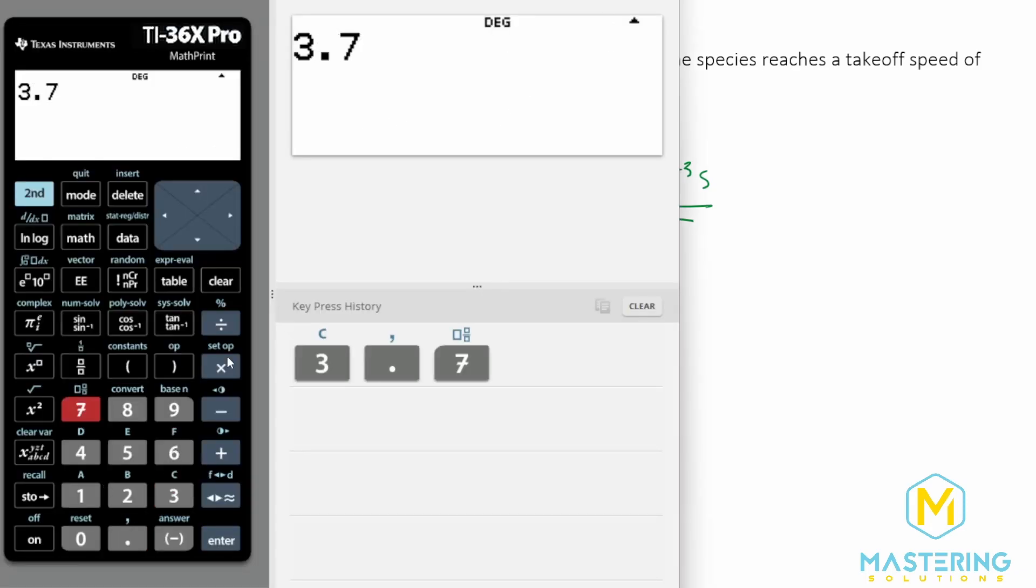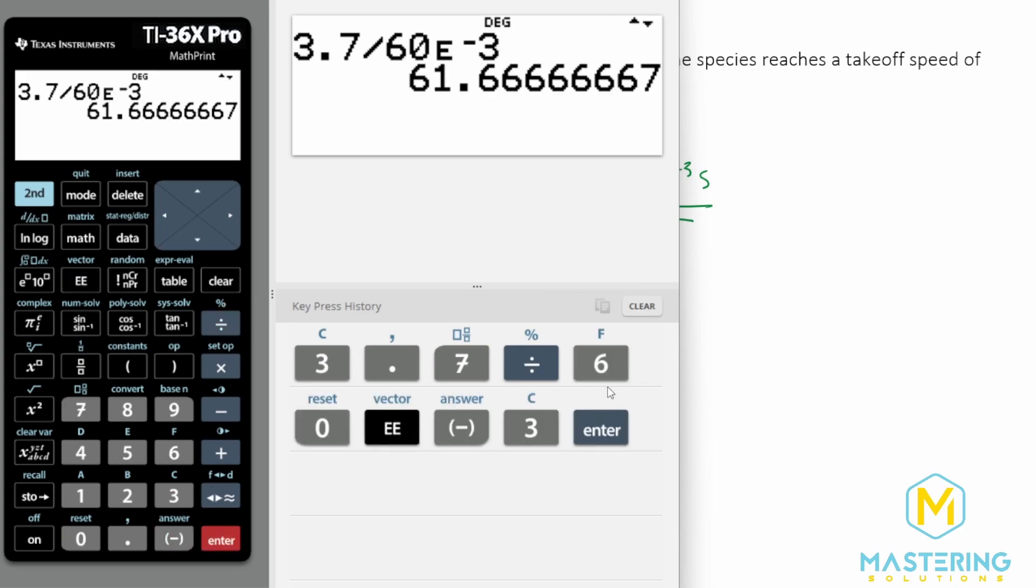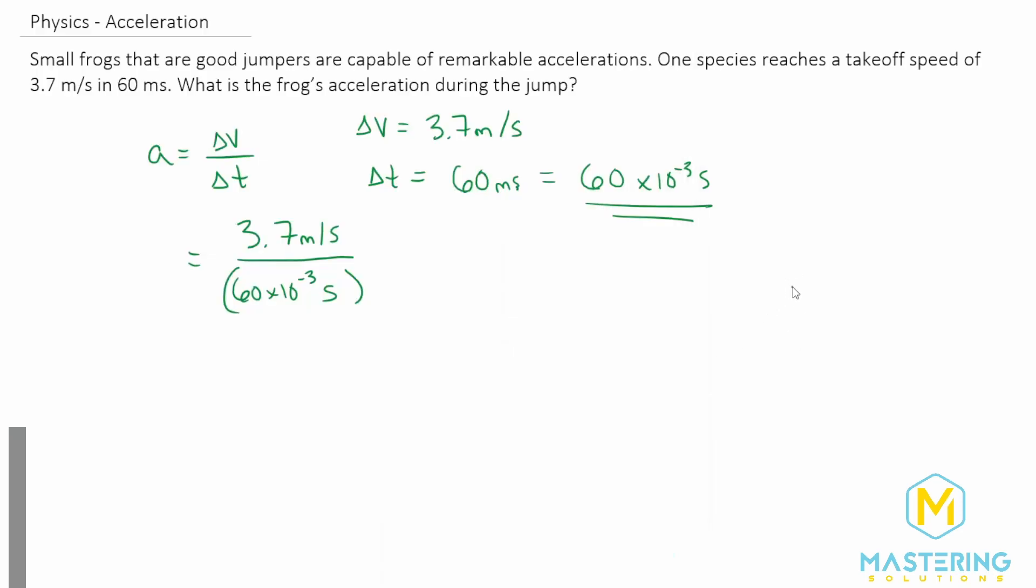3.7 meters per second divided by 60 times 10 to the negative 3 gives us 61.67. So that is going to be 62 basically. So our answer is 62 meters per second squared for the acceleration of the frog during his jump.